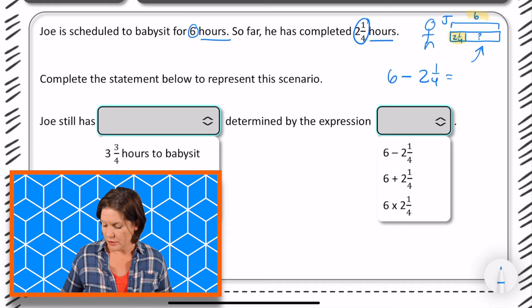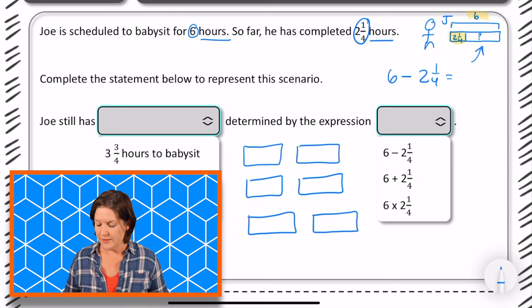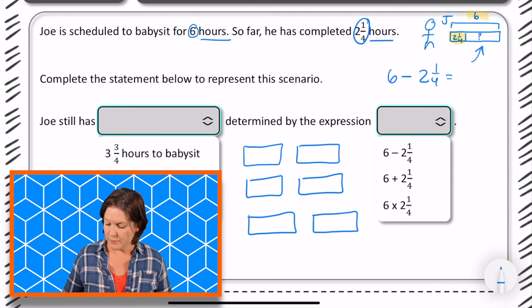So let me model this out with a little drawing just to make it make sense. So one whole hour, two whole hours, three whole hours, four whole hours, five whole hours, and six whole hours. Okay, that's what he's working on. So far he's completed two - so one, two, and one-fourth.